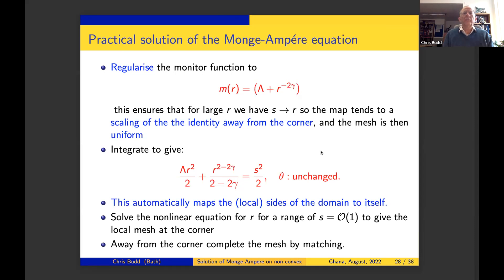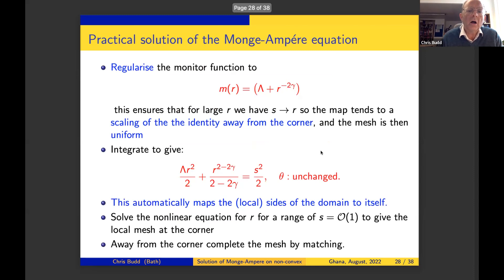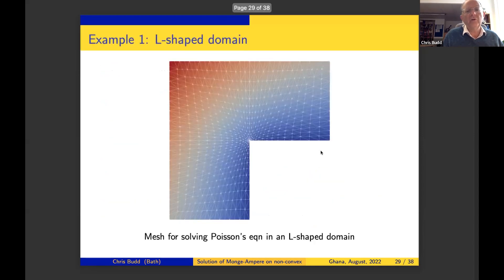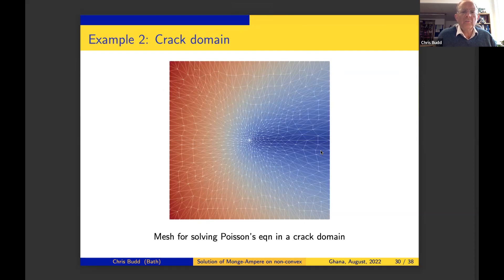You regularize the monitor function so it tends to a uniform mesh away from the corner, then solve the Monge-Ampère equation analytically and complete the mesh by matching local to global solution. The resulting meshes are beautiful: for the L-shaped domain with γ = 2/3, the mesh is beautifully regular with lovely grading and symmetry — compare that to the H-adaptive mesh which is all over the place. For a crack domain (α = 2π, a very hard problem), the method naturally produces a clean, appropriate mesh.